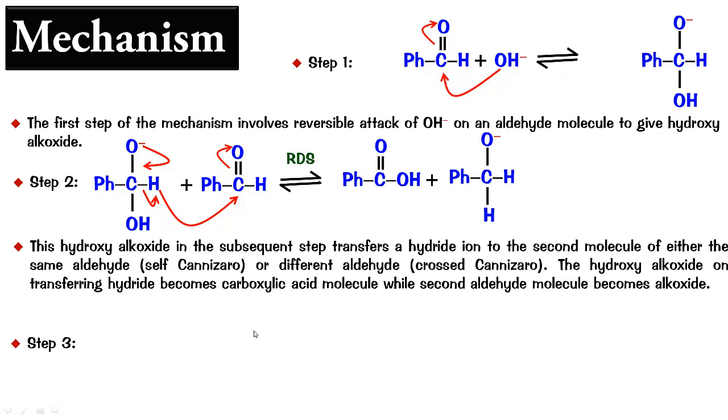And in the last step which is an irreversible proton transfer, this is a more acidic strong acid, strong base, proton shift, we get a weak base and a weak acid. Alcohol is a weaker acid than carboxylic acid and carboxylate is a weaker base compared to the alkoxide.